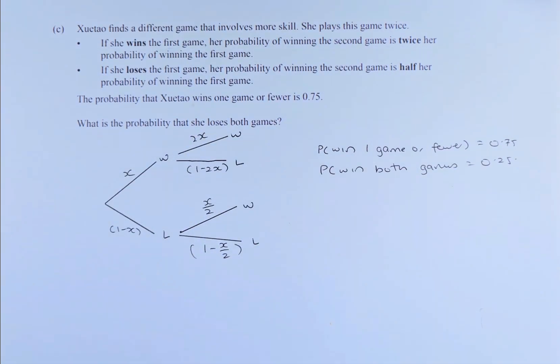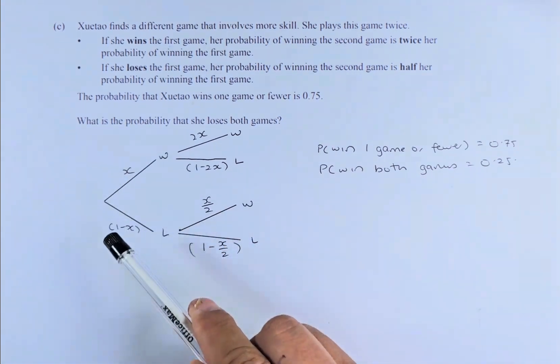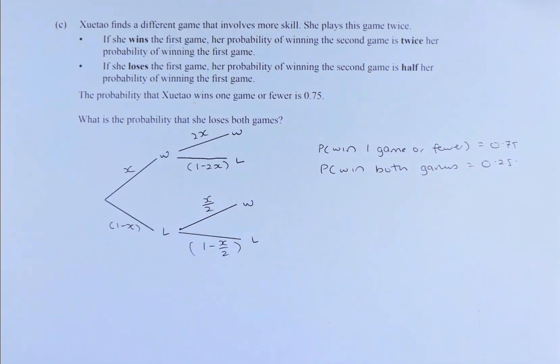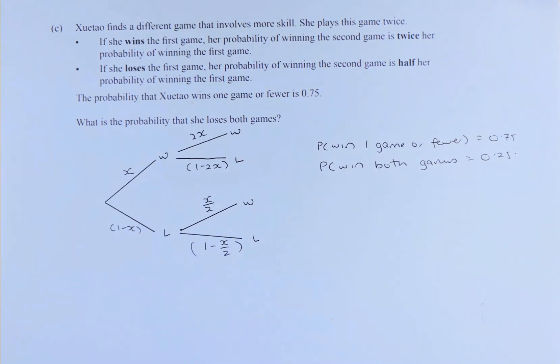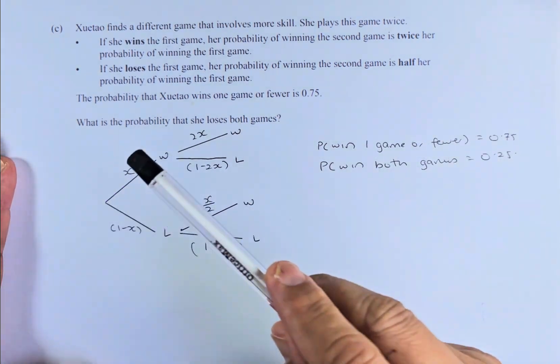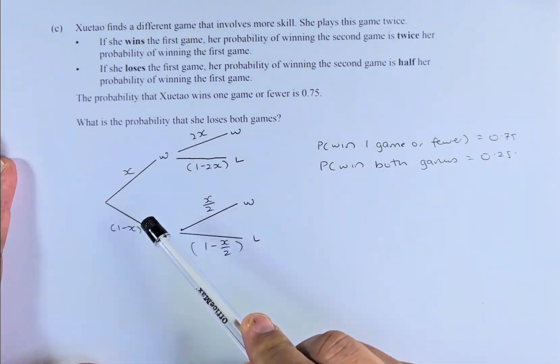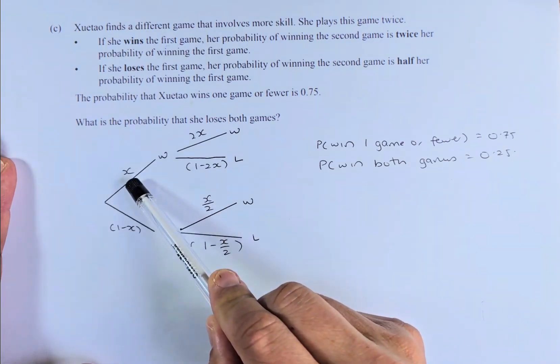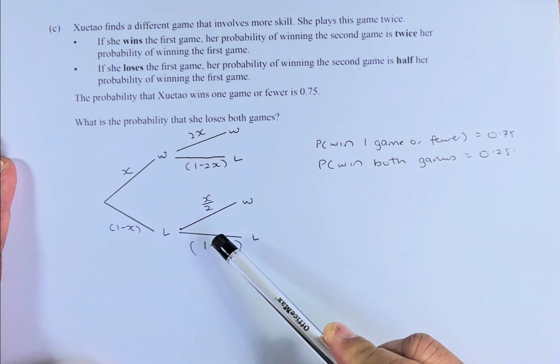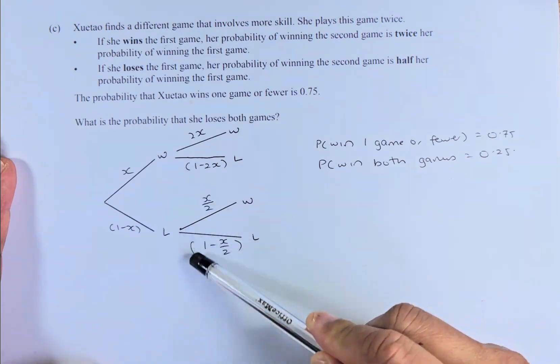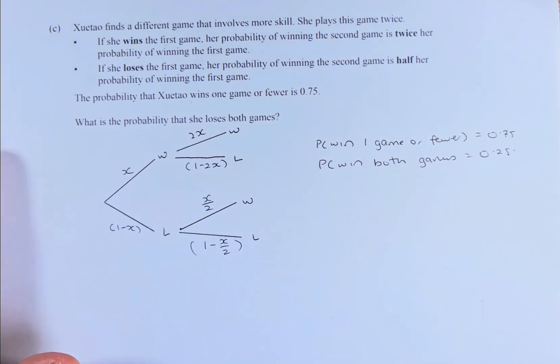The second part: if she loses her first game, this might be 1 minus X because these two numbers add up to 1. Her probability of winning the second game is half her probability of winning the first game. So the chance of winning is half, X over 2, and losing is going to be 1 minus X over 2 because these two numbers, when they add up, equal 1.